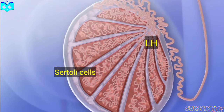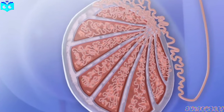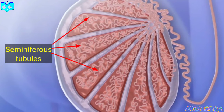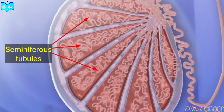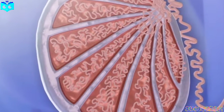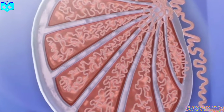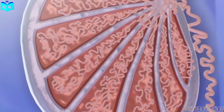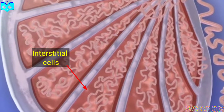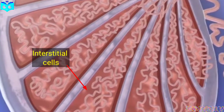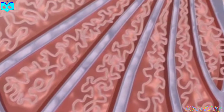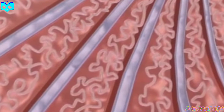Sertoli cells, also known as nurse cells, provide nutrition to the maturing sperm. They also release androgen-binding protein and anti-Müllerian factor. LH acts on Leydig, or interstitial, cells to produce testosterone and support the various stages of sperm cell development.